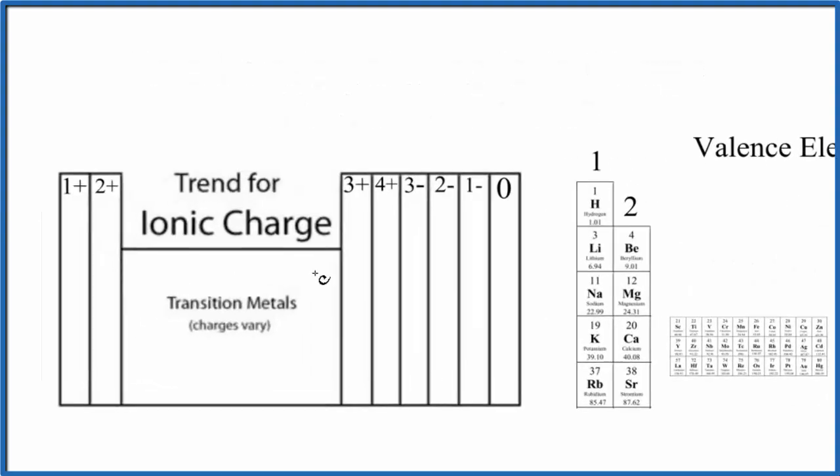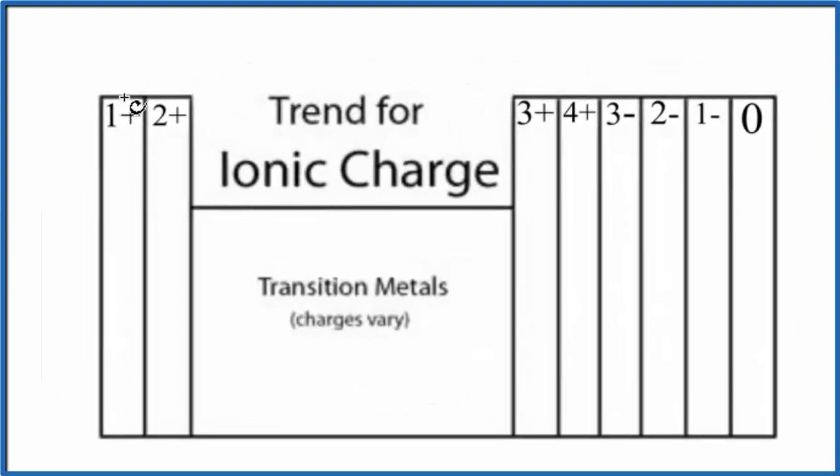So ionic charge, here's the trend. Group one, all of these form ions with a one plus ionic charge. Sometimes it's just written plus. Group two, two plus ionic charge. And it's positive because they've lost electrons. They've lost valence electrons, either through forming a chemical bond or perhaps another process.